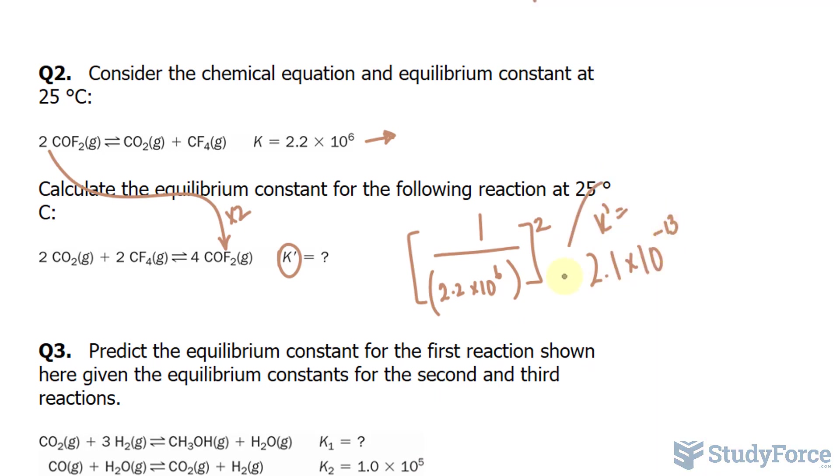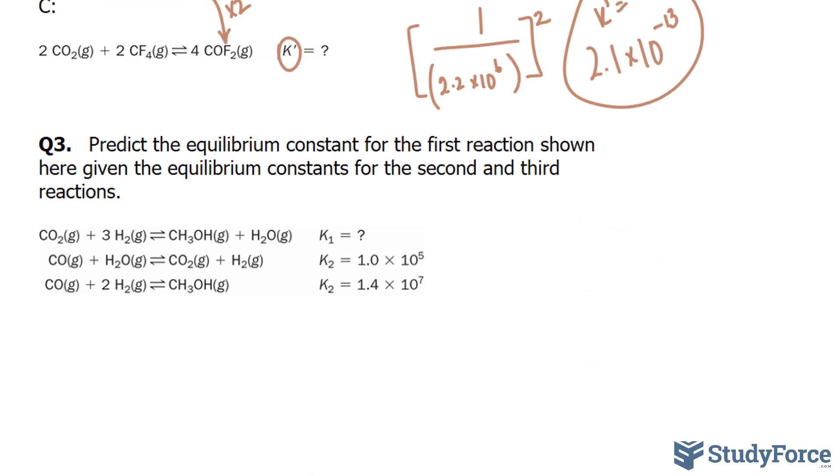This right here is K prime, and that's our new equilibrium constant. If you'd like to see the answer to question number 3, make sure that you watch part 2 of this series where the solution is covered. We'll see you soon.